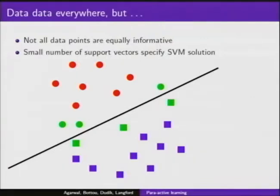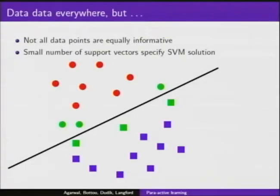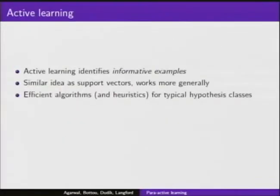So there is a generic way of describing this situation that we saw before, this intuition of a few number of informative data points. This can be captured fairly broadly. There's a whole field around it called active learning, which essentially tries to solve this precise problem, go over a large collection of data, try to find the examples that are most informative towards the statistical problem at hand. And then use them for learning. And this is a similar idea as support vectors, but works a lot more broadly. And the nice thing is that at this point, we have efficient algorithms or, in many cases, even more efficient heuristics to solve this sort of a question for many generic hypothesis classes, loss functions, and so on.